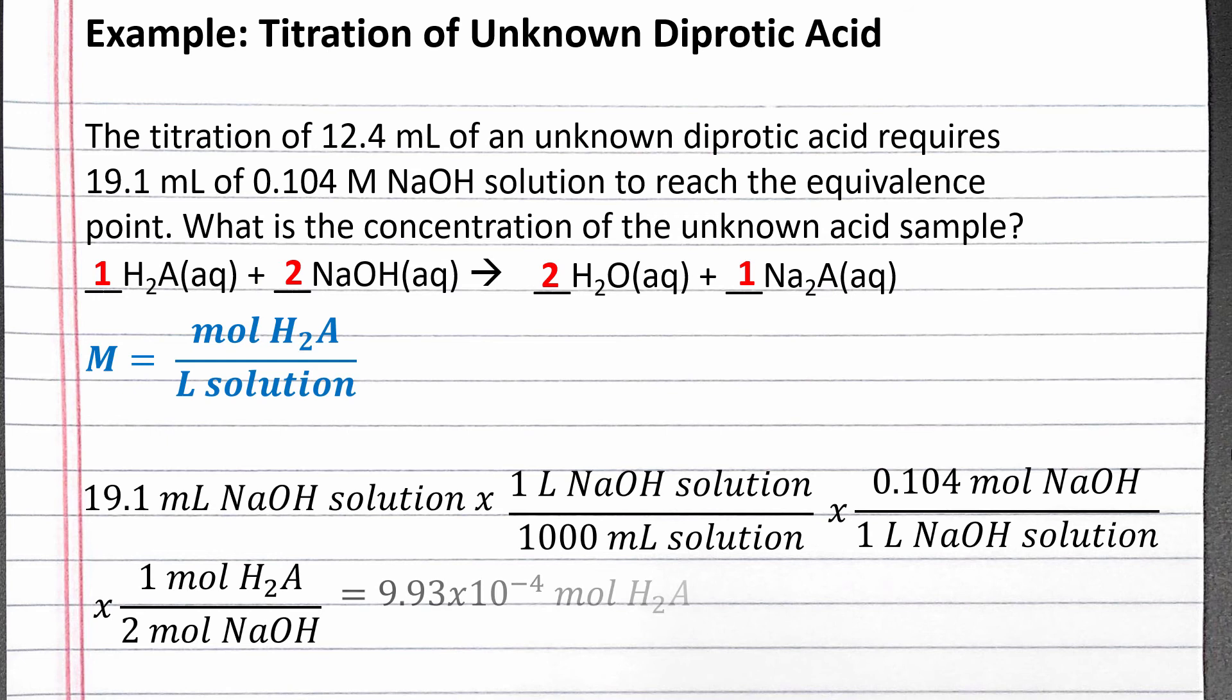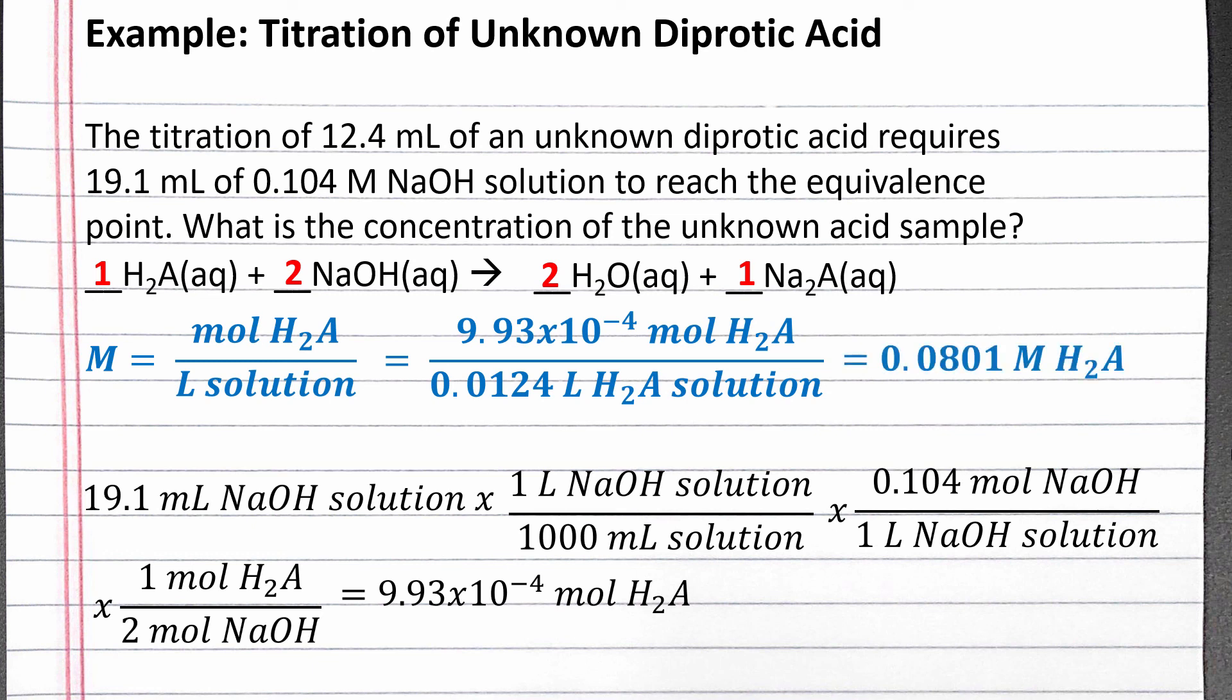Completing the calculation, we have 9.93 times 10 to the negative 4th moles of H2A. We can substitute this into our equation for molarity. Moles of H2A goes in the numerator and liters of H2A solution goes in the denominator. We convert our 12.4 milliliters of H2A solution into liters before plugging it into this equation. Completing our molarity calculation, we should get 0.0801 molar H2A.